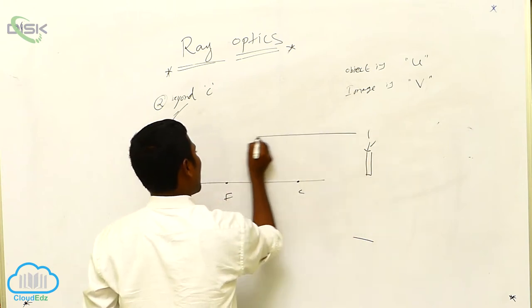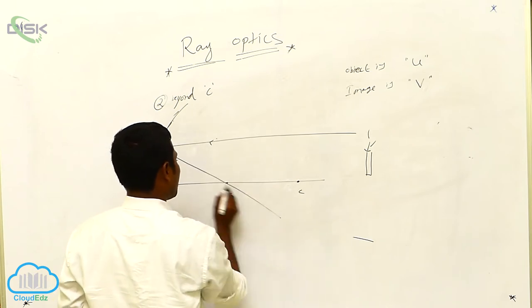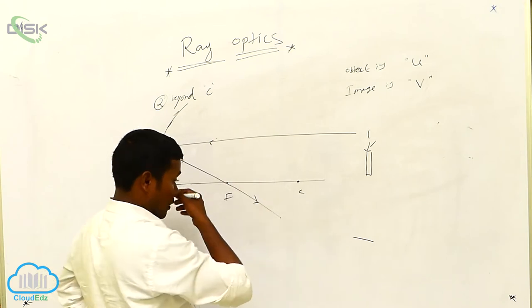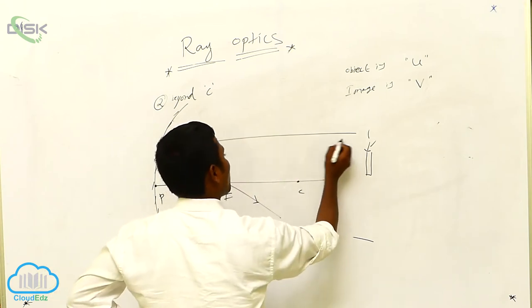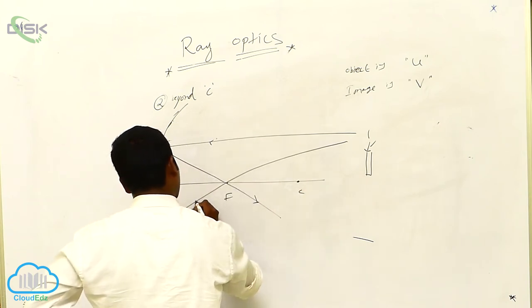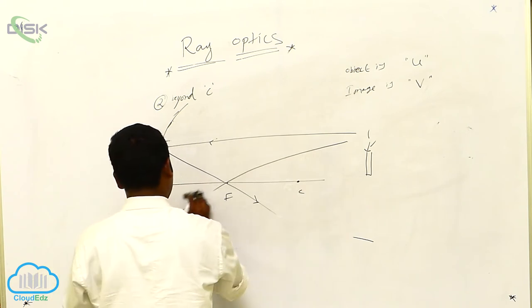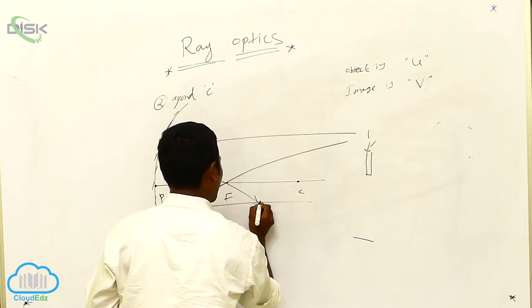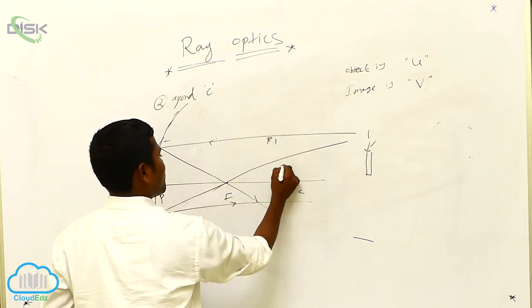From that, I consider R1 ray. Again, same thing. Now I consider the other ray also. That is R2 I am considering. This is R1. This is R2.